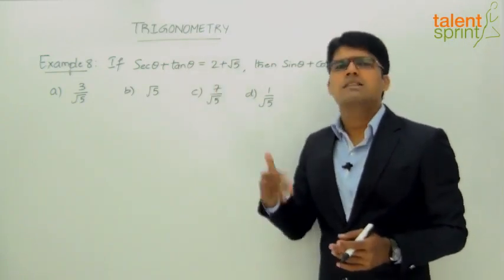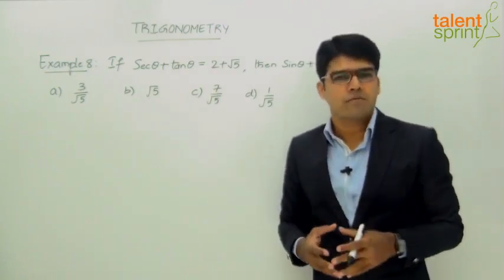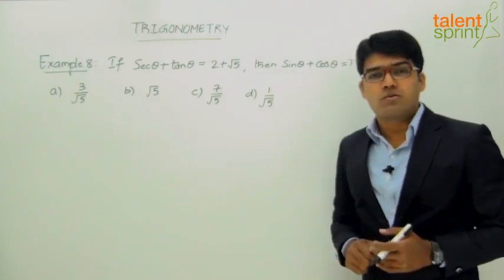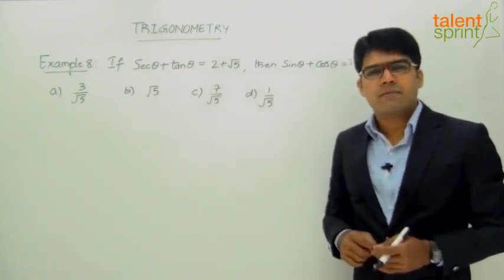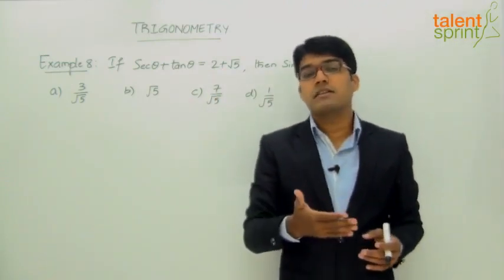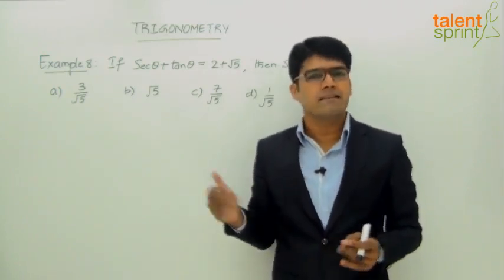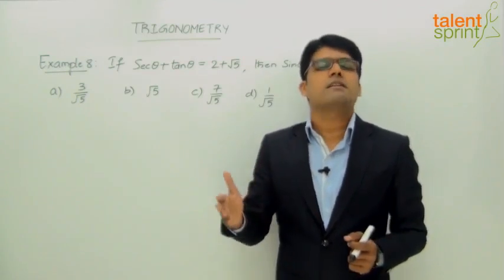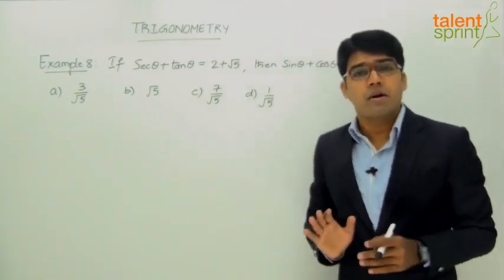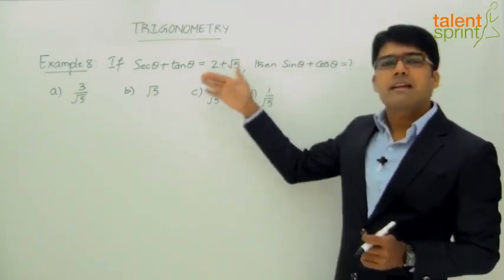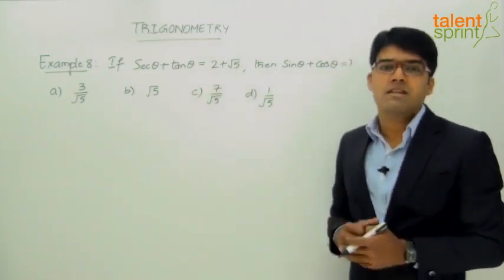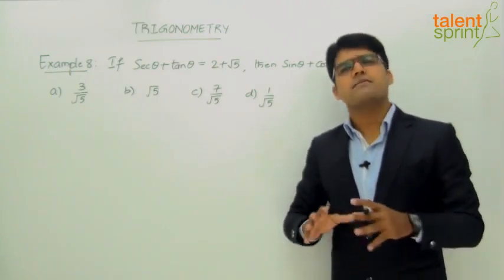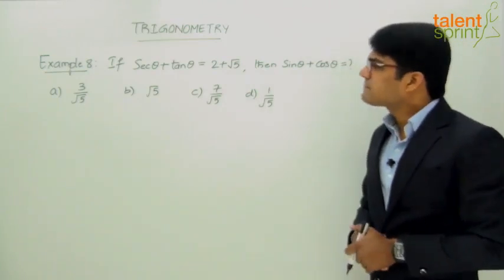Random substitution is possible only if it is balanced on both sides; otherwise we follow the regular method using trigonometric and algebraic formulae. Here, the right-hand side is 2 plus root 5. We know that for standard angles 0, 30, 45, 60, and 90 degrees, we never get root 5 as a numerator or denominator in any trigonometric ratio. So trying random substitution would be lengthy and waste time. The only choice is the regular method.